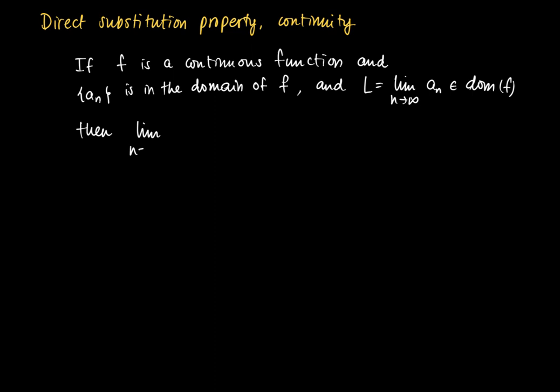Then we may calculate the limit for n to infinity of f(aₙ) as f of the limiting behavior of aₙ, which equals f(L). So instead of focusing on the limit of f(aₙ), we may just plug in the value L. This is referred to as the direct substitution property.